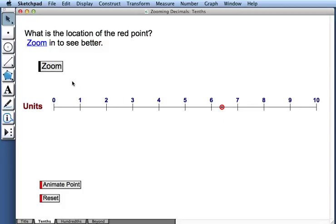Well, this zoom button here does the same thing. It's going to give me a magnified view of the number line between 6 and 7. Let's watch what happens when I press it.